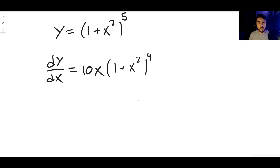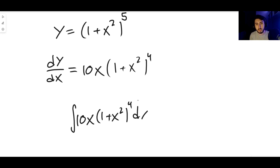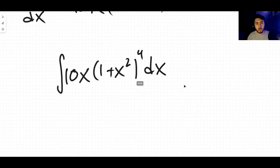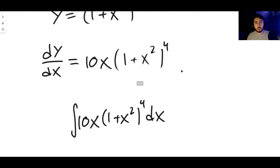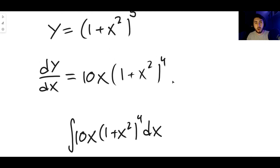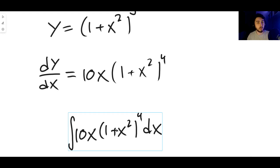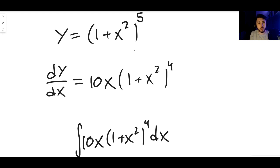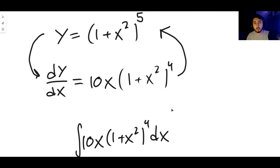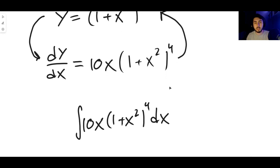Now here's the question: if you needed to integrate 10x times 1 plus x squared to the power of 4 dx, what would you do? You'd say, well, I know what the derivative of the original function - which was 1 plus x squared to the 5 - is. I know it differentiates to 10x times 1 plus x squared to the 4. Therefore the integral must just be 1 plus x squared to the 5. You're just going backwards. Of course you'd add a plus c on the end, but it's absolutely right.